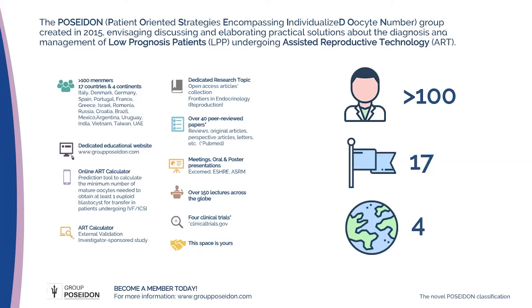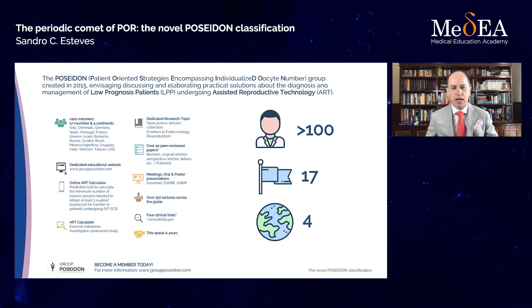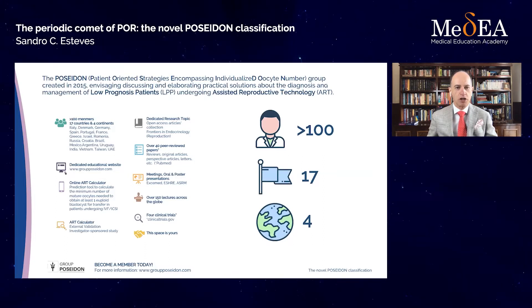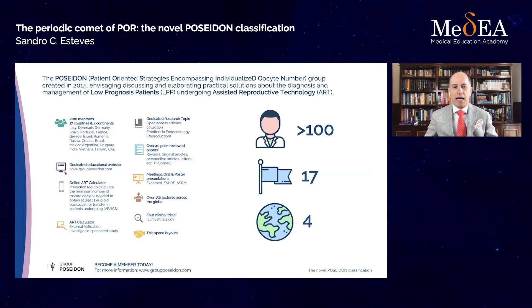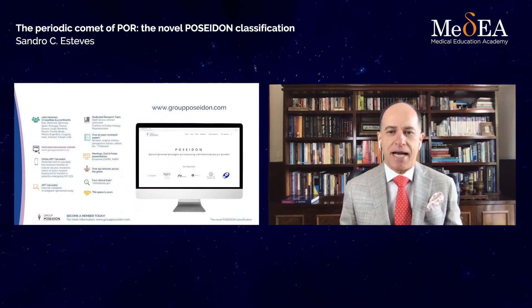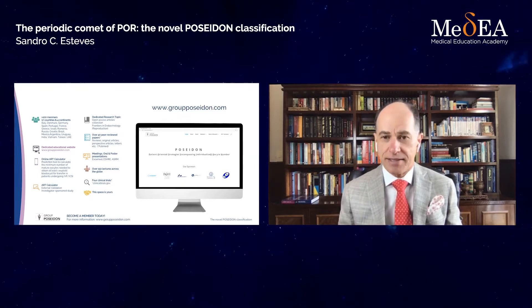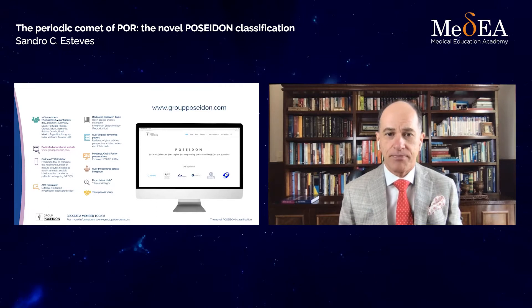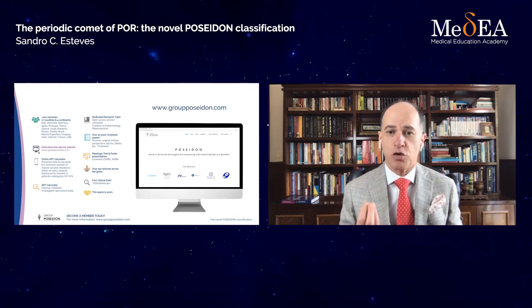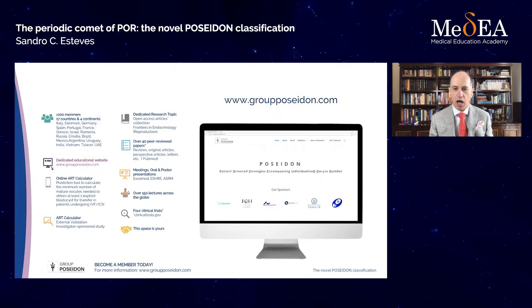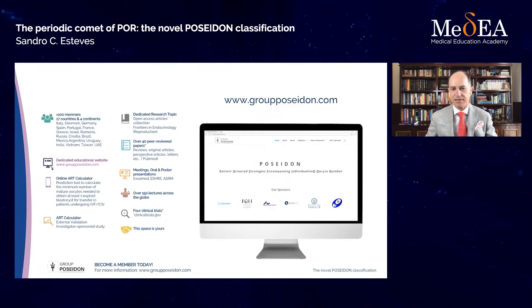Because our initiative is open, everyone interested in becoming a member of the Poseidon group can join. We have a dedicated educational website at www.groupposeidon.com. I invite you to visit our website and consider becoming a member. The website includes a lot of resources, including papers, slide kits, and the ART calculator — a predictive model we developed for estimating the number of oocytes needed to achieve at least one euploid blastocyst for transfer in patients undergoing ART.